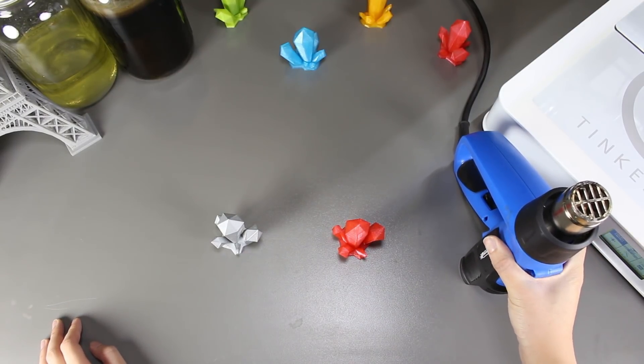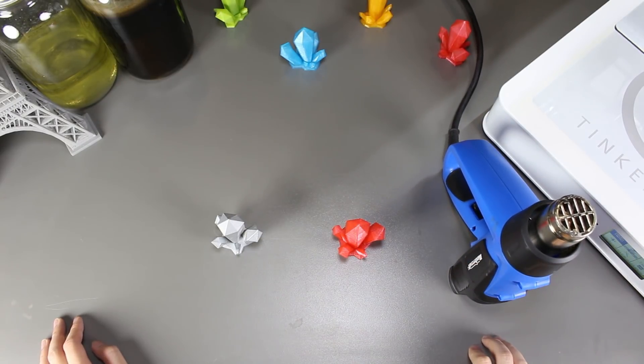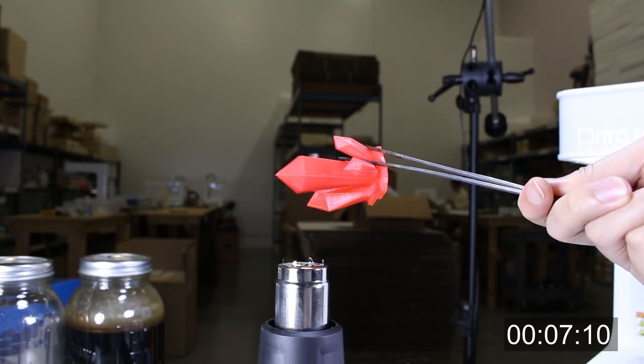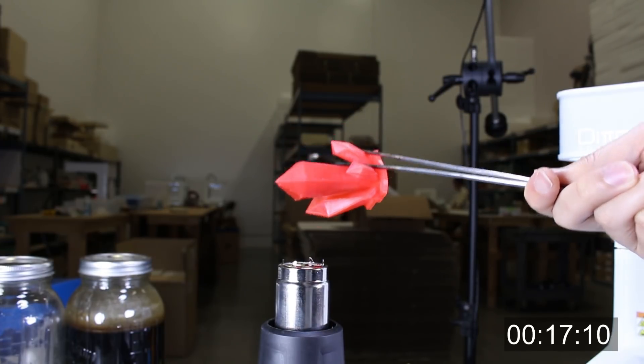We will be using the heat gun here at high settings which translates to roughly 550 degrees Celsius, and we'll see how long it fares up against it. So we'll start with the regular gem. Let's turn on the heat gun and start the timer once we put it on top. Here it goes.